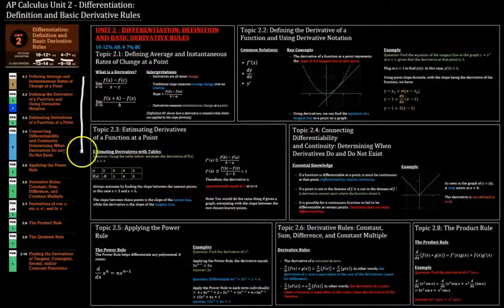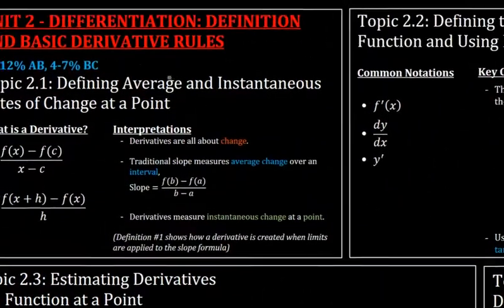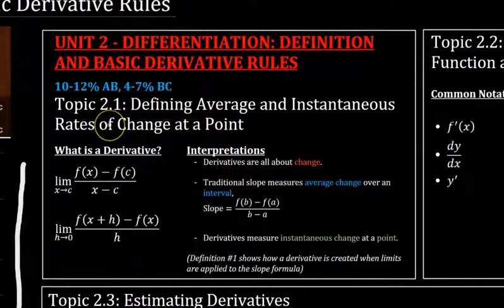On the left you can see all the topics in unit 2, 2.1 through 2.10. Let's start off with topic 2.1 defining average and instantaneous rates of change at a point.